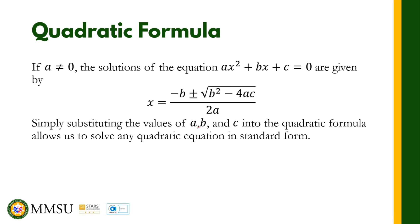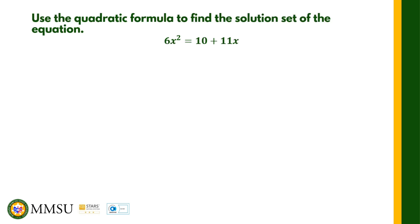We substitute these values into this formula to solve for the values of x. So we shall illustrate the use of the quadratic formula. In this example, we are going to use the quadratic formula to find the solution set of the equation 6x squared equals 10 plus 11x. As you can see, the given equation is not yet written in standard form, so our first step here is to write this one in standard form.